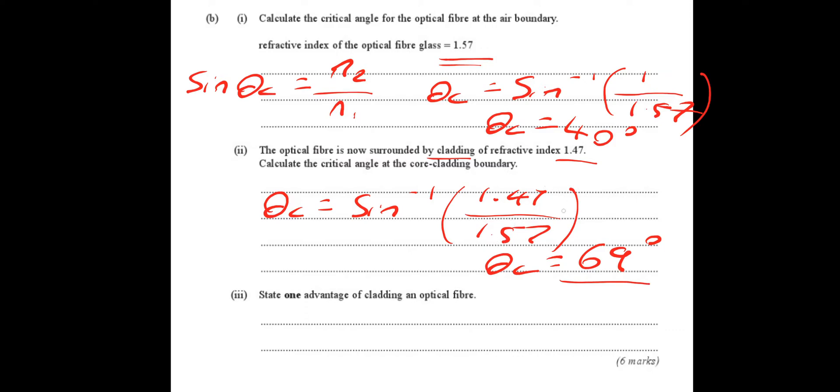You would know if you did this wrong, if you got them the wrong way around, because if you tried to do inverse sine of 1.57 divided by 1.47, you would be trying to do inverse sine of a number greater than 1. You would just get math error.